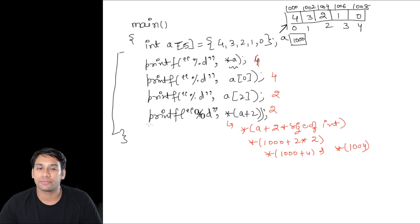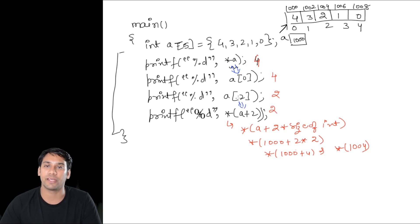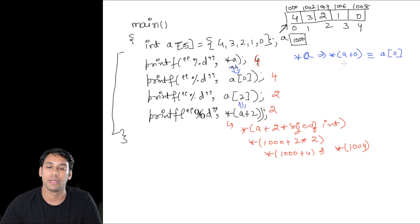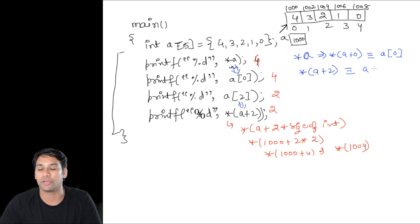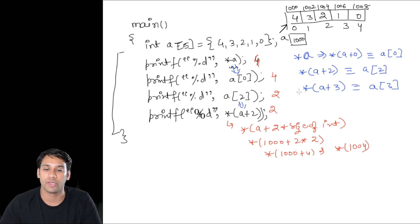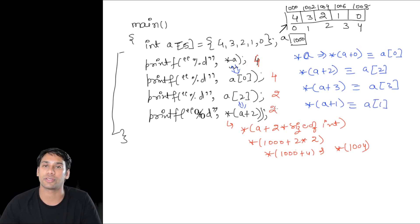But if you look closely, you will find that these statements are equivalent and are printing the value at the same location. That means when I say *(a + 2), this can be written as a[2], meaning I am accessing index location 2. When I say *(a + 3), that is equivalent to a[3], accessing index location 3. When I say *(a + 1), this is equivalent to a[1], accessing index location 1.